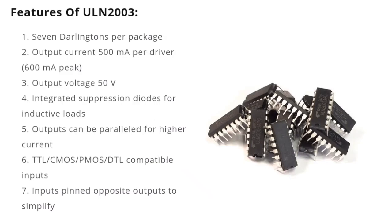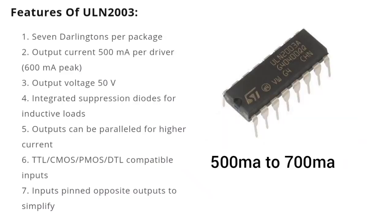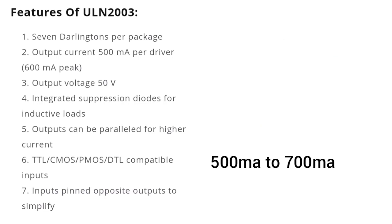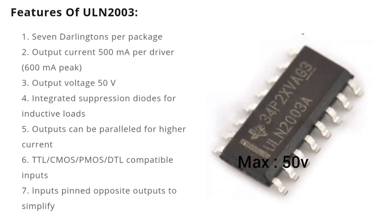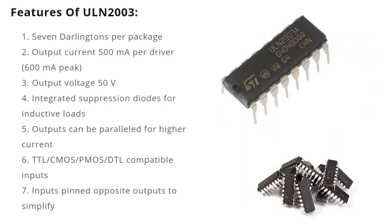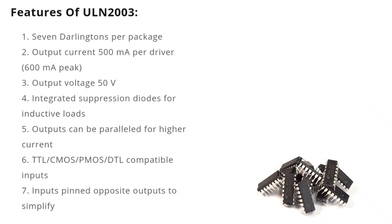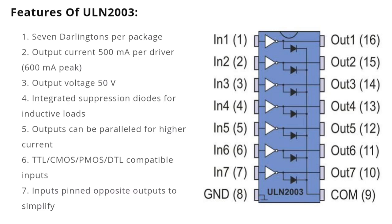Features of ULN-2003: 7 Darlingtons per package, output current 500 mA per driver with 600 mA peak, output voltage 50 V with integrated suppression diodes for inductive loads. Outputs can be paralleled for higher current. TTL, CMOS, PMOS, and DTL compatible inputs. Inputs are pinned opposite outputs to simplify layout.